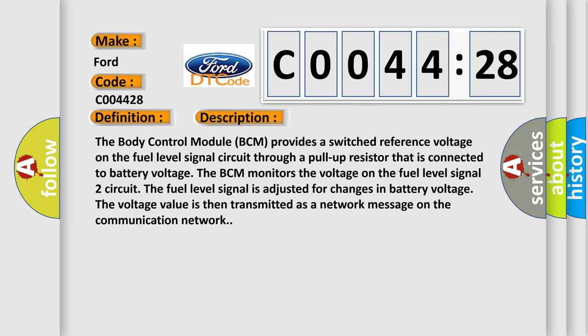The body control module BCM provides a switched reference voltage on the fuel level signal circuit through a pull-up resistor that is connected to battery voltage. The BCM monitors the voltage on the fuel level signal 2 circuit. The fuel level signal is adjusted for changes in battery voltage. The voltage value is then transmitted as a network message on the communication network.